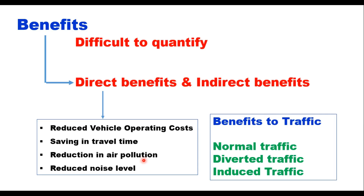Normal traffic is the traffic which would have developed on the existing facility with or without improvement. Diverted traffic is the traffic diverted onto or away from the facility once it is constructed. Induced traffic is the new traffic generated because of the improved facility or because of a new highway.